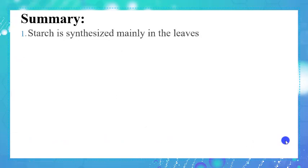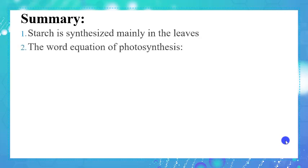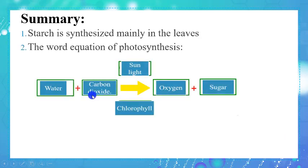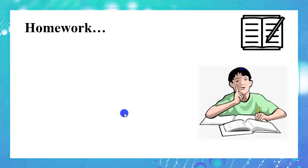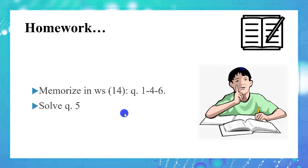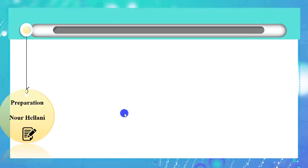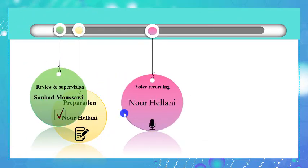Today we learned that starch is synthesized mainly in the leaves of the plant, and the word equation of photosynthesis: water plus carbon dioxide will produce oxygen and sugar in the presence of sunlight and chlorophyll. As homework, please memorize questions 1, 4, and 6 in worksheet 14, and please solve question 5. Thank you for watching and good luck.